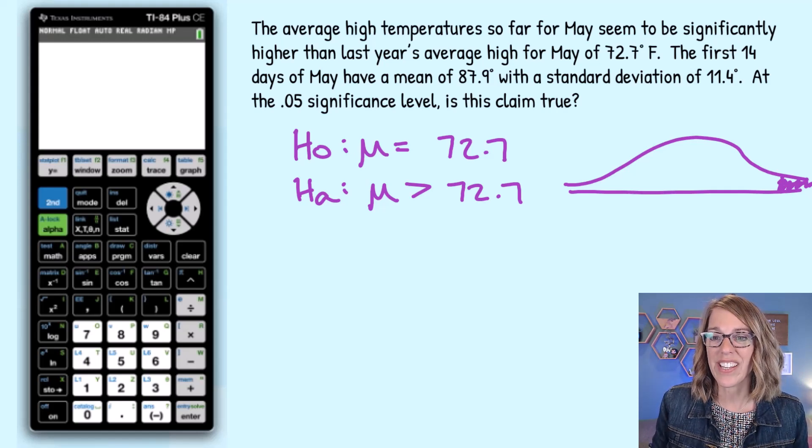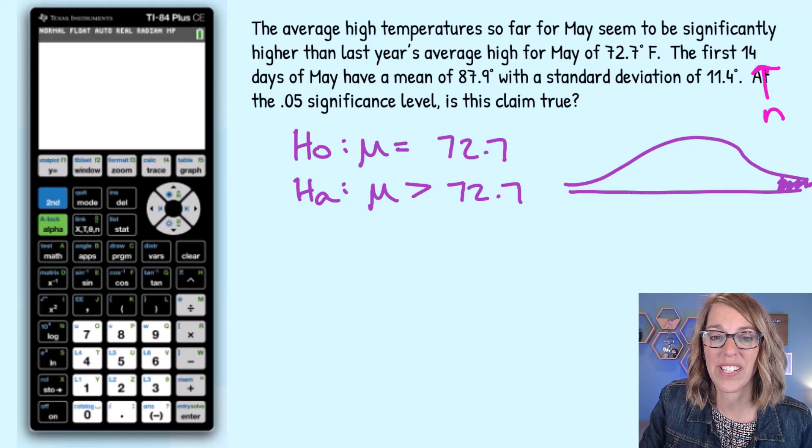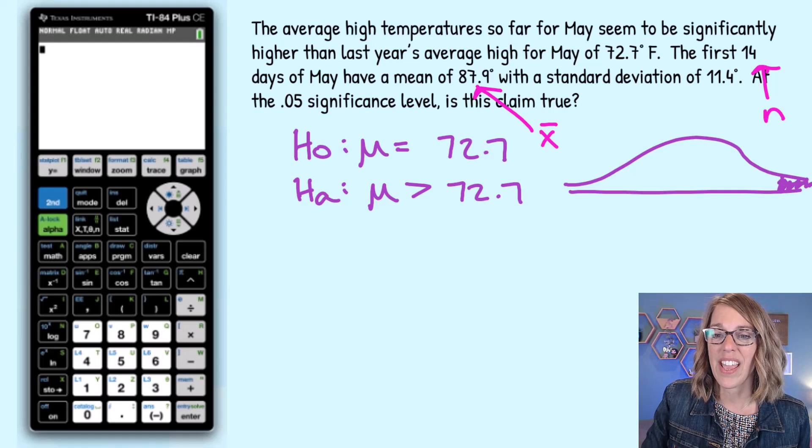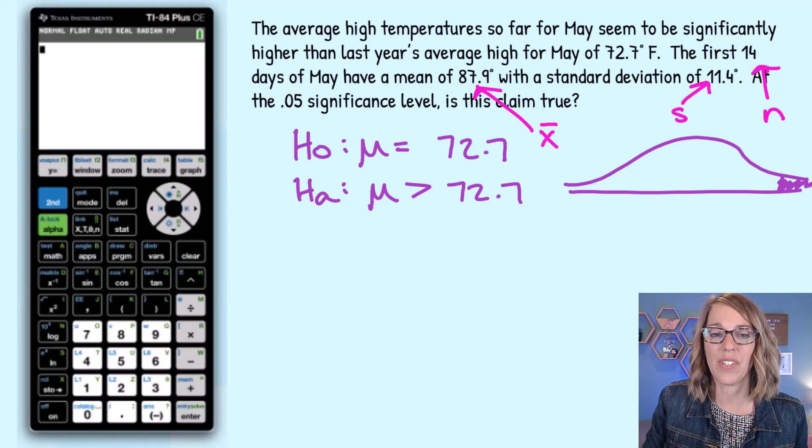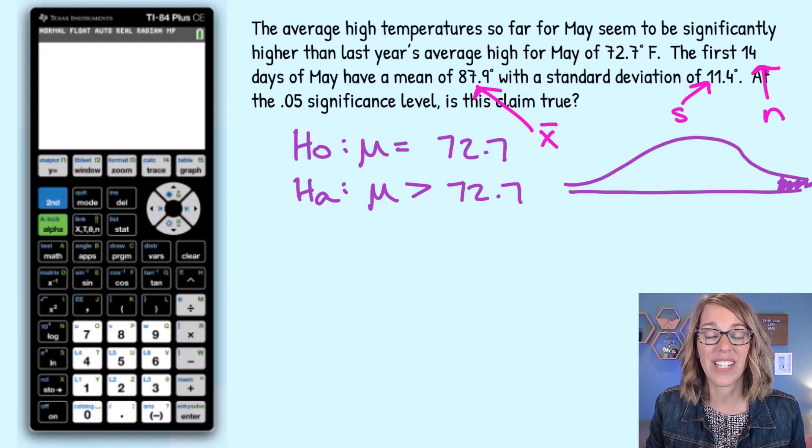So if we continue reading here it says the first 14 days that's going to be my n. So the first 14 days of May has a mean of 87.9. This is my sample mean. We're going to call that x̄ and a sample standard deviation of 11.4. That's going to be our s and we're going to be testing this at the 0.05 significance level.